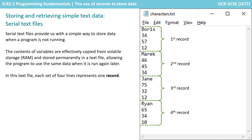In the simple text file we're showing here, each set of four lines represents one record. We effectively have the name of a character followed by three integers, which in our example game from previous videos represents some statistics for that character. The order that the data is stored in this text file is very specific — if they appear out of order, our program will fail to work, and this is known as data dependency.